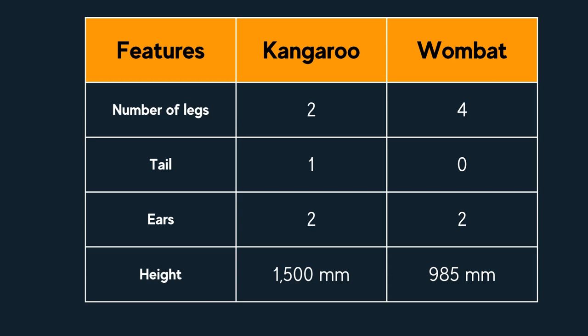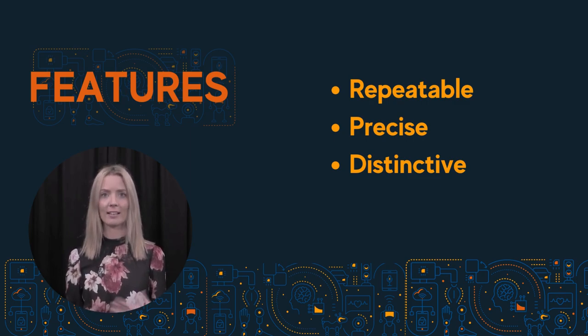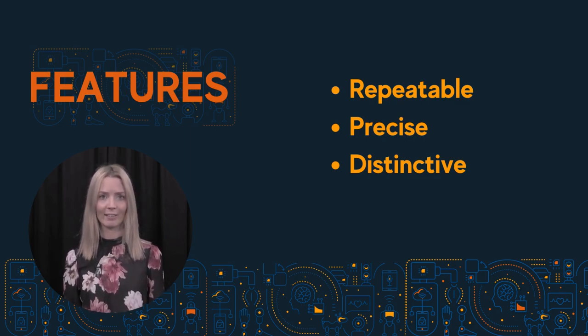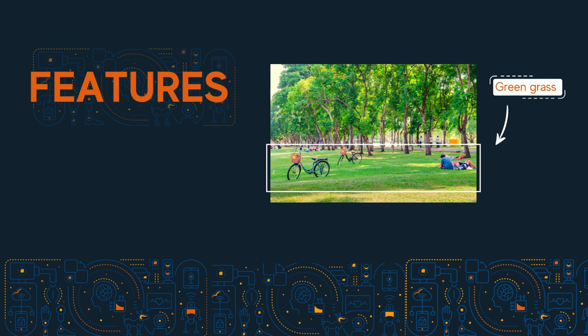Next, we undertake a process of feature extraction. In feature extraction, we are looking for common features or attributes that characterise what we're seeing in an image, which helps the computer make sense of the image. The features we extract are the points of interest in the image. Features need to be repeatable and precise so that they can be found in other images, and distinctive in their appearance so they're not mistaken for other features. For example, we might identify an ear or an eye as being a good feature. Something like green grass is not the best as it's too ambiguous and could be featured in too many instances.